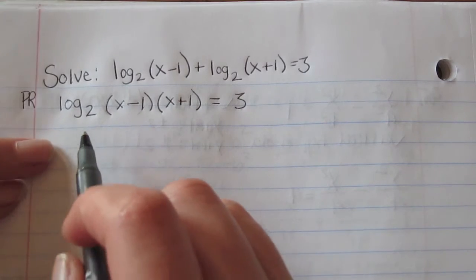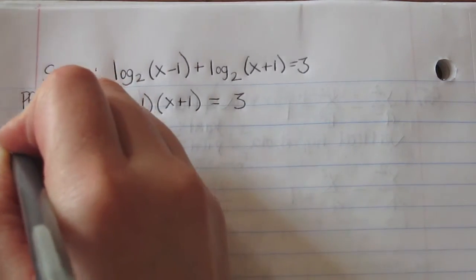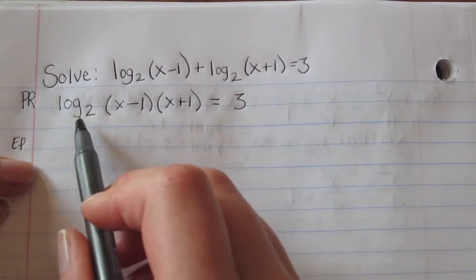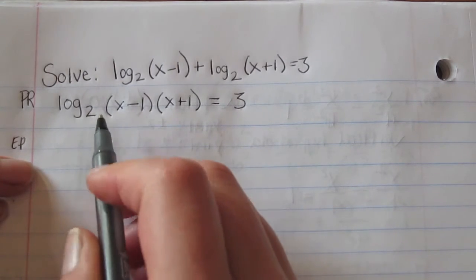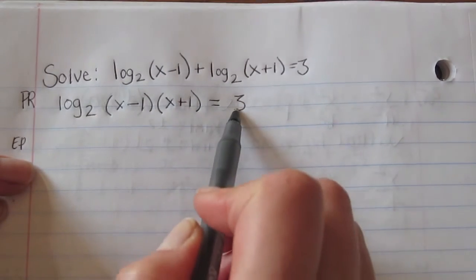Looking at this now, we can use the exponential property which takes the 2 and makes it the base of the log.